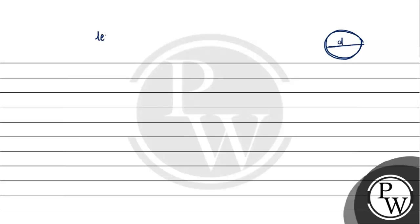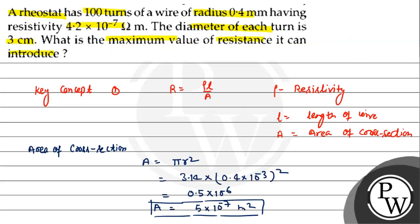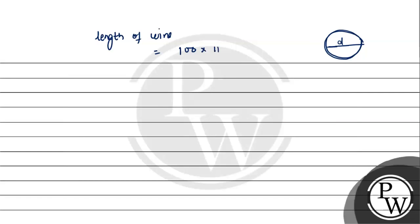The circumference of one turn is πD. How many turns are there? Total 100 turns. So the length of wire will be 100 × πD.